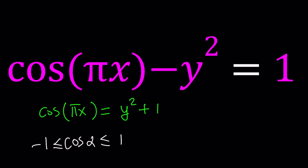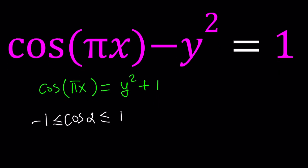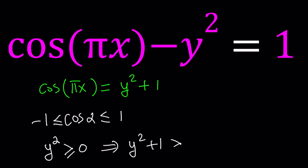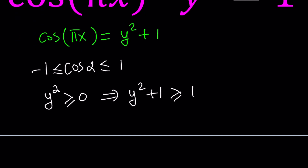Now, what does that give us? Let's take a look at the right-hand side. We have y squared plus 1. What do you know about y squared plus 1? It's a parabola. Does it have any x-intercepts? Here's what we know: y squared, if y is real, is greater than or equal to 0. If you add 1 to both sides, you get y squared plus 1 is greater than or equal to 1.